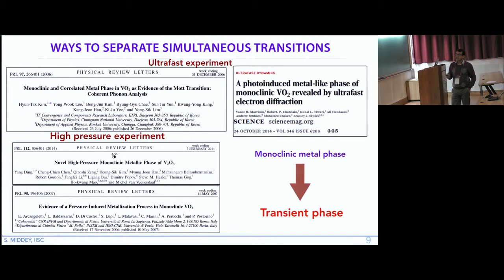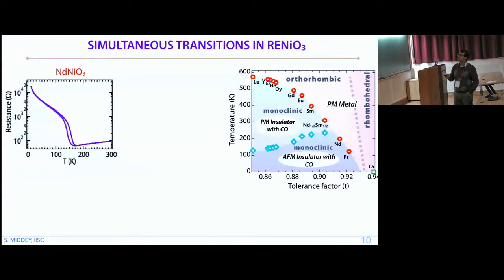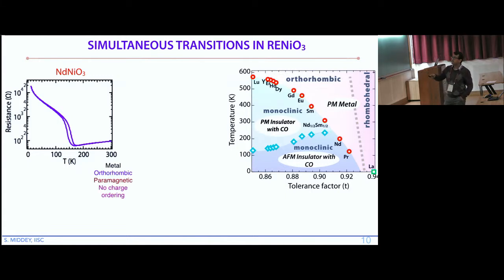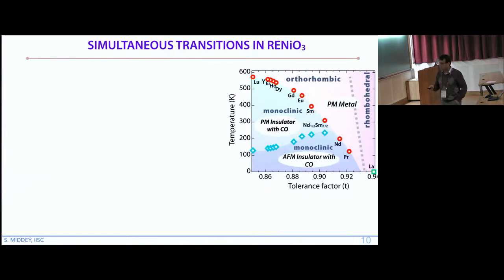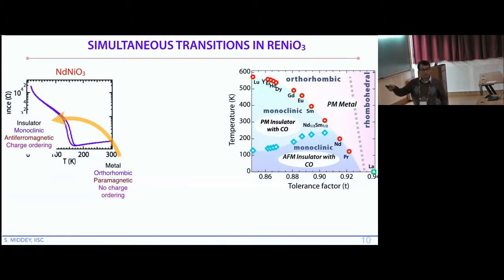We are interested in generating this unusual phase as a ground state without external fields. For rare earth nickelates, this is the phase diagram as a function of rare earth ion. For neodymium nickelate, it undergoes four simultaneous transitions: from metal to insulator, with structural, magnetic, and charge-ordering transitions together. There is a strong debate in the literature about what drives these electronic transitions. Separating the diagram, there are transitions between paramagnetic metallic, paramagnetic insulating, and antiferromagnetic insulating phases — all four transitions for bulk samples.